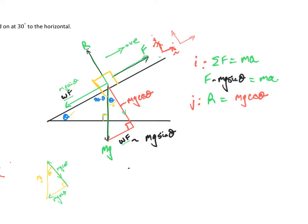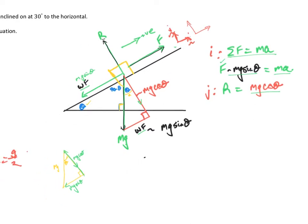In terms of resolving our forces, the sum of the forces is equal to ma. In the i direction, I've got F acting up the plane and mg sine theta acting down the plane, and that's equal to ma. In the j direction, I've got my reaction force acting upwards, away from the plane, and mg cos theta acting downwards, perpendicular to the plane. So R is going to be mg cos theta. That's how we resolve our forces when looking at an inclined plane — everything is parallel to and perpendicular to the plane.